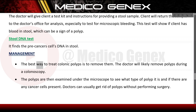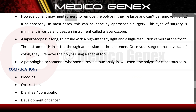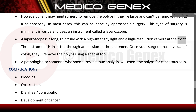Management: the best way to treat colonic polyps is to remove them. The doctor will likely remove polyps during a colonoscopy, after which they are examined under the microscope to determine the type and whether any cancer cells are present. Doctors can usually remove polyps without surgery; however, if polyps are large and cannot be removed during colonoscopy, surgery may be needed. In most cases, this is done by laparoscopic surgery — a minimally invasive procedure using a laparoscope, which is a long, thin tube with a high-intensity light and high-resolution camera inserted through an incision in the abdomen. The surgeon removes polyps using a special tool, and a pathologist then checks the polyps for cancerous cells.